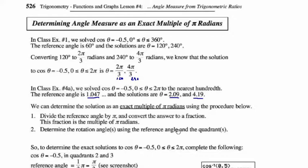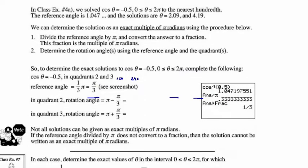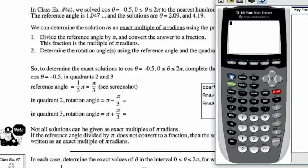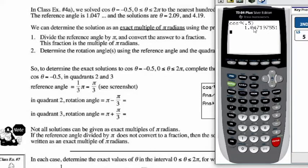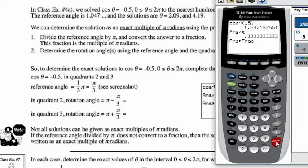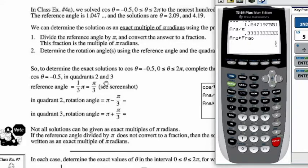For cos theta equals negative 0.5 in radian measure: it's negative in quadrant 2 and 3. The reference angle is pi over 3. In quadrant 2, the rotation angle is pi minus pi over 3: that's 3 pi over 3 minus pi over 3, which equals 2 pi over 3. In quadrant 3, the rotation angle is pi plus pi over 3: that's 3 pi over 3 plus pi over 3, which equals 4 pi over 3.